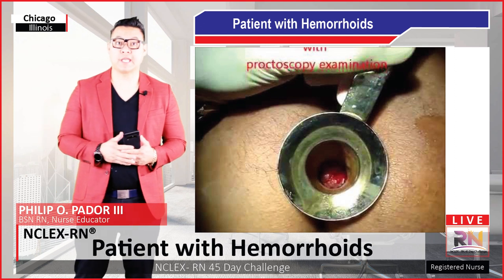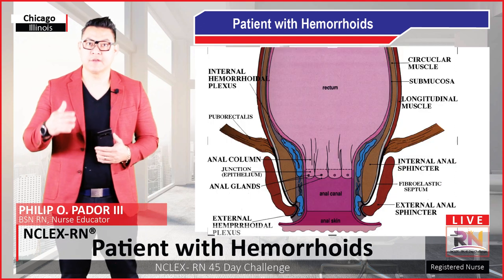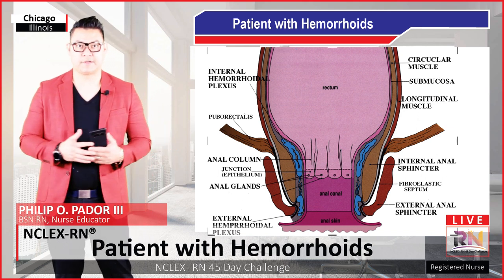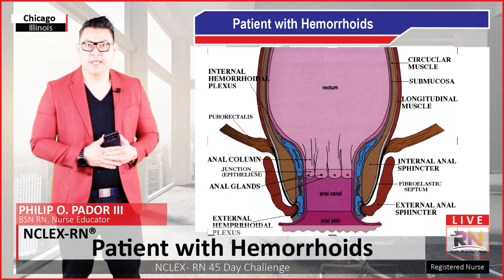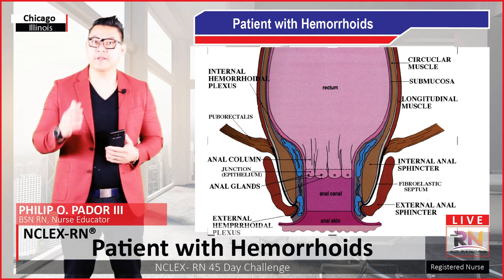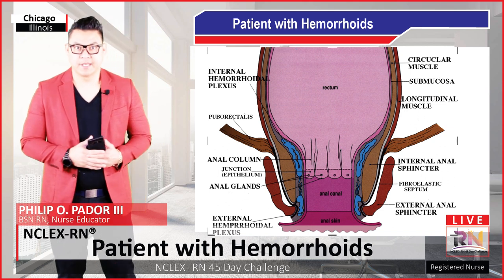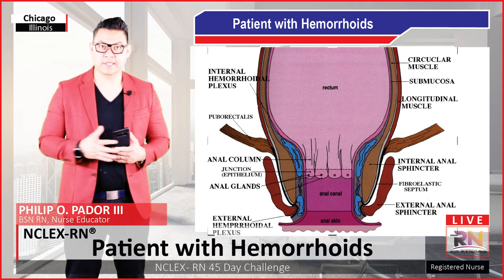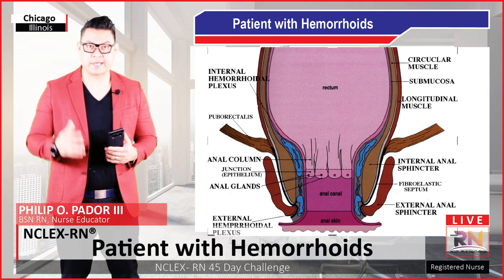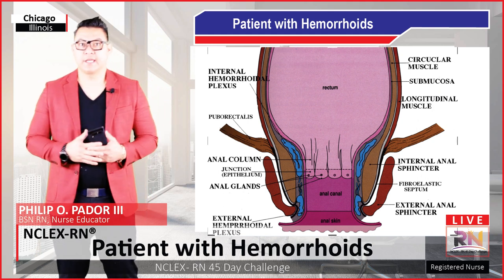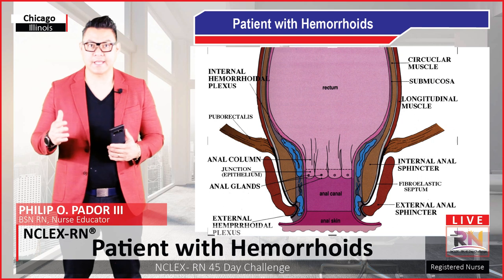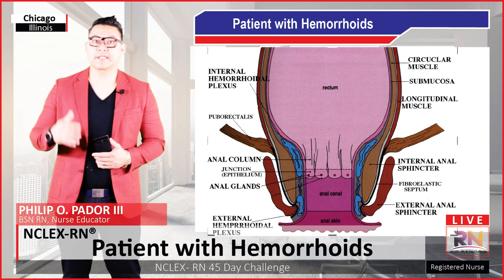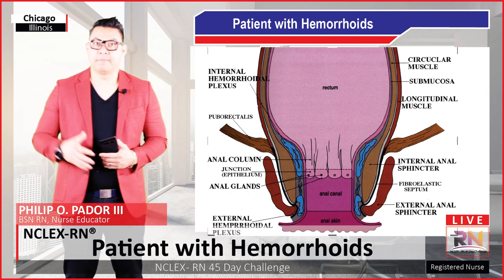Hemorrhoids can also be staged. Internal hemorrhoids can be staged from 1 to 4, and it is important to stage because the treatment will also differ. Looking more closely at the anatomy, the middle rectal vein and the inferior rectal vein drain the anal area. The middle rectal veins drain into the inferior mesenteric vein, and the inferior rectal drains eventually into the inferior vena cava through the pudendal vein. The internal hemorrhoid plexus lies above the pectinate line and the external hemorrhoid plexus lies below the pectinate line.